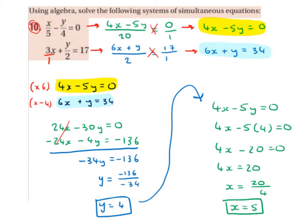6 by 4x is 24x. 6 by minus 5y is minus 30y. 6 by 0 is 0. Minus 4 by 6x is minus 24x. Minus 4 by y is minus 4y. Minus 4 by 34 is minus 136. Now I can cancel out my x's. Minus 30y minus 4y is minus 34y. 0 minus 136 is minus 136. Minus 136 divided by minus 34 gives me 4, so y equals 4.